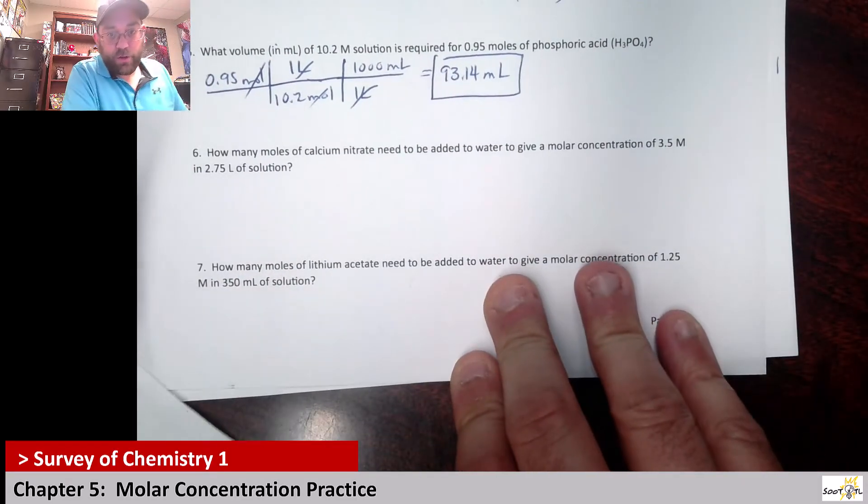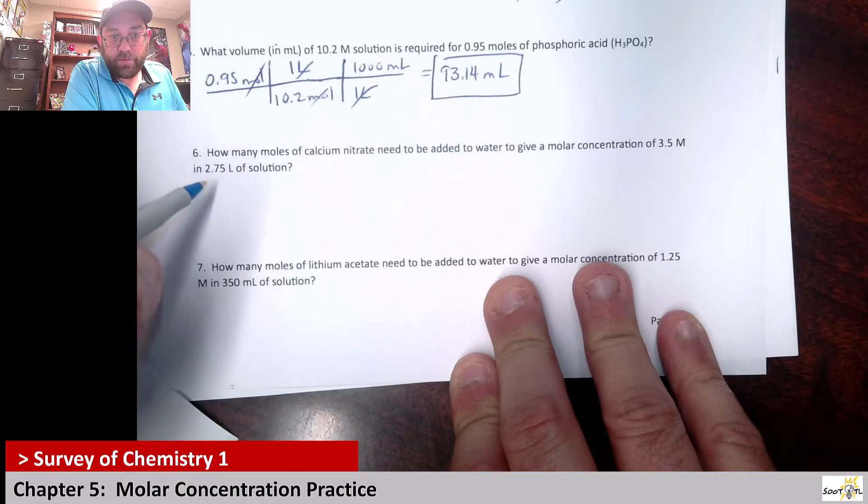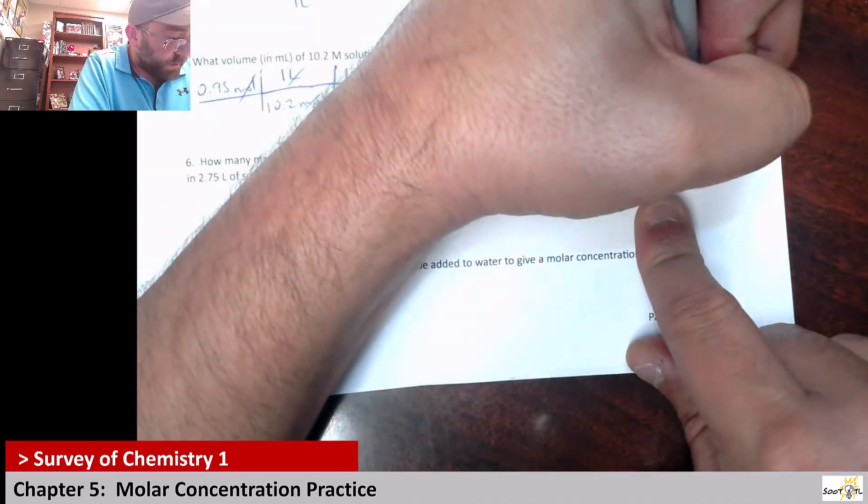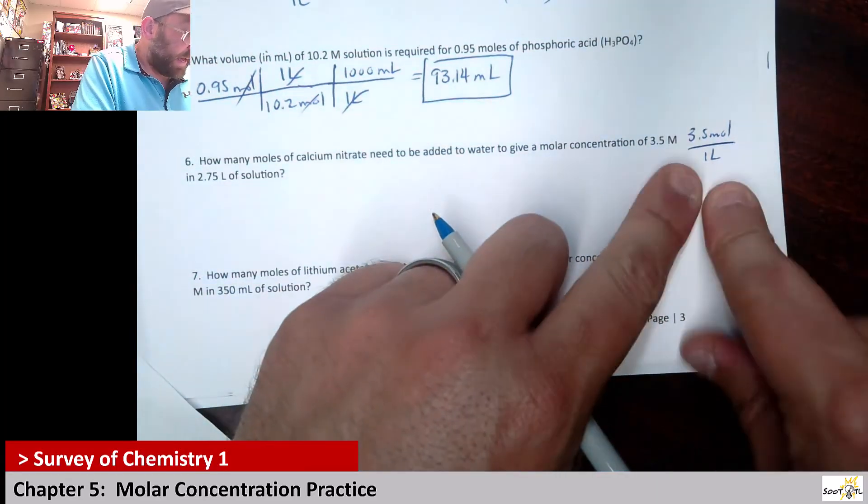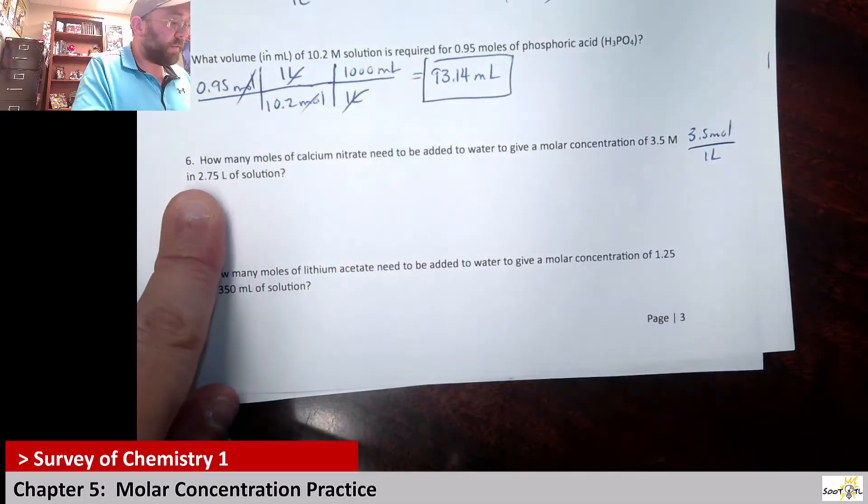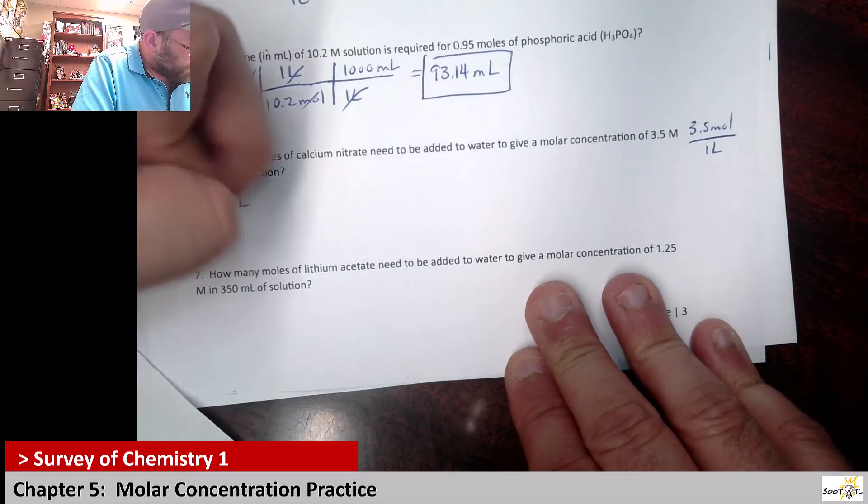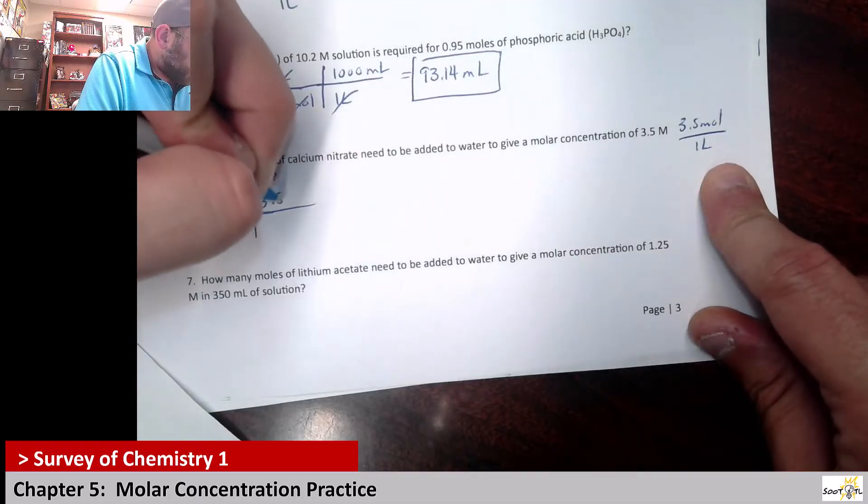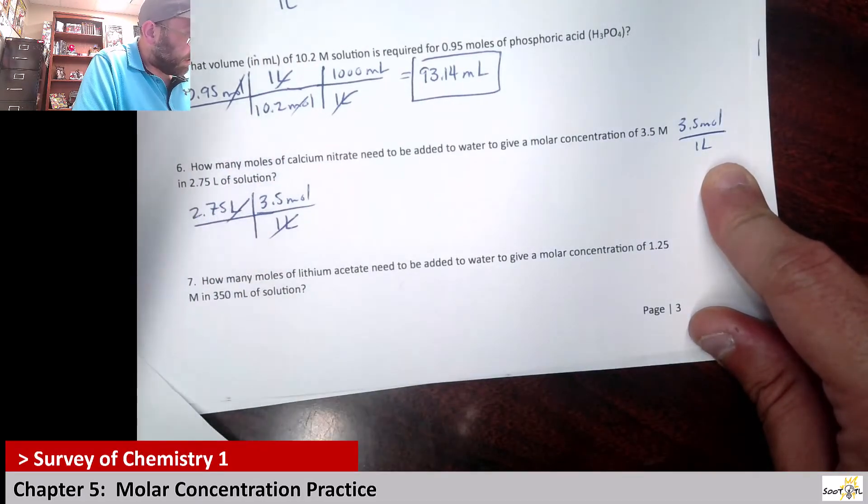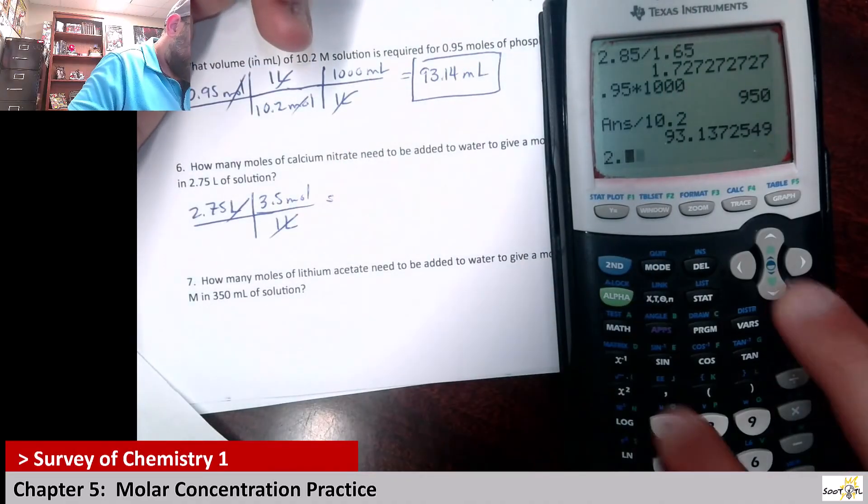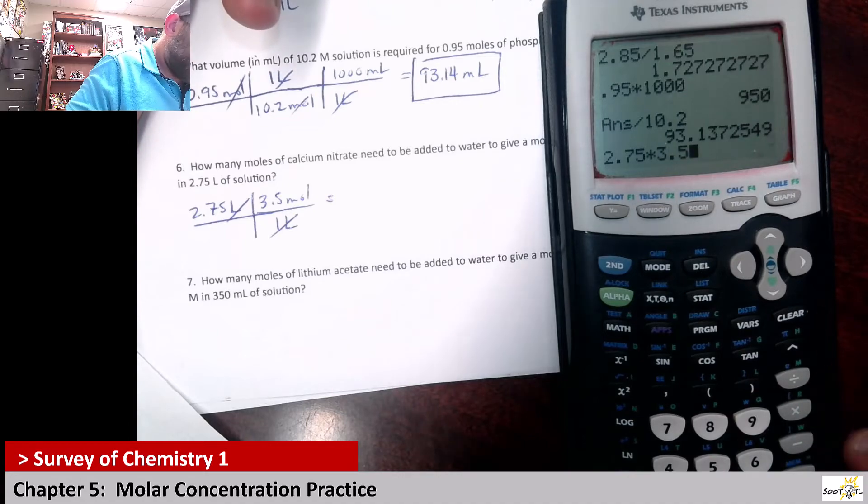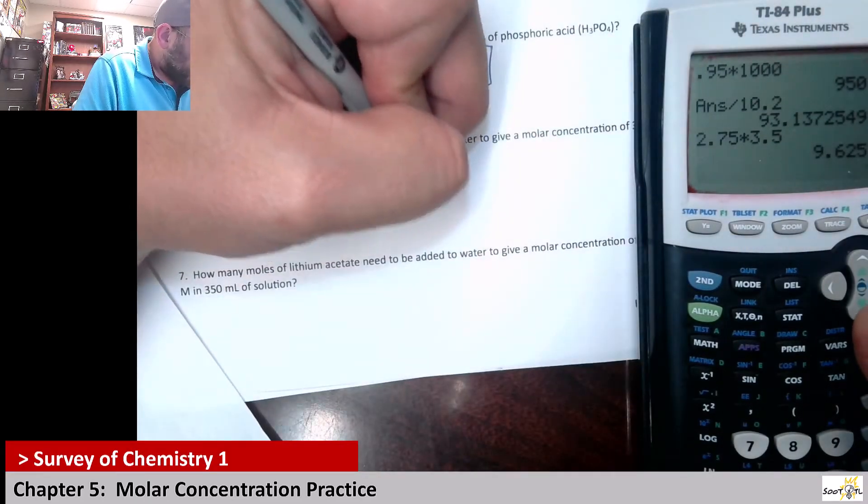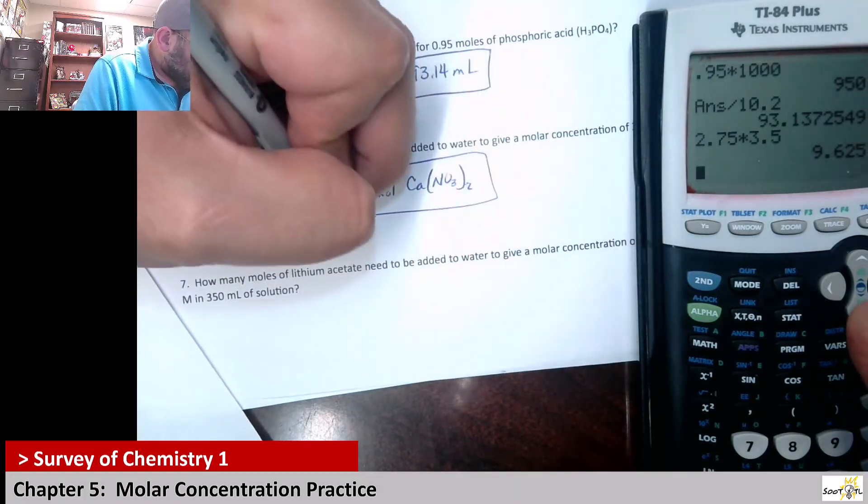Number six is how many moles of calcium nitrate need to be added to water to give a molar concentration of 3.5 molar in a 2.75 liter solution? So what it's saying is you have a solution that is 3.5 molar, which is 3.5 moles for every one liter. You need to make that concentration, and it needs to have this volume, 2.75 liters. So if you take that 2.75 liters, to know the moles I need, I just take this concentration and say 3.5 moles in one liter. That would allow the liters to cancel, and I would really just say I need 2.75 times 3.5. That gives me 9.63. So I need 9.63 moles of calcium nitrate.